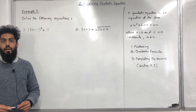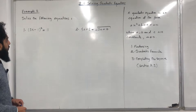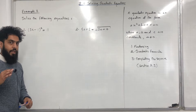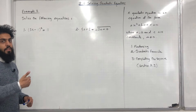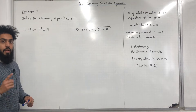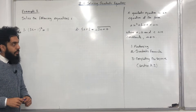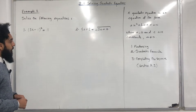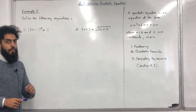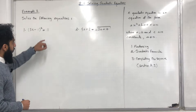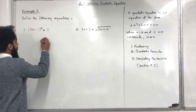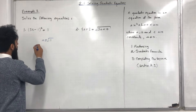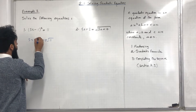Moving on to example number 3: solve the following equations. We have 1 and 2. Note that in this particular question you are not told to use a specific method, so it's up to you what method you use. Let's start off with the first equation. I'm going to solve it by making X the subject. First, I take the plus or minus square root of 11, giving 3X - 1 = ±√11.